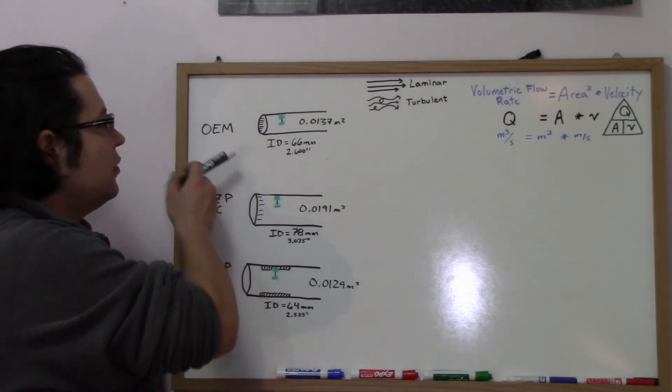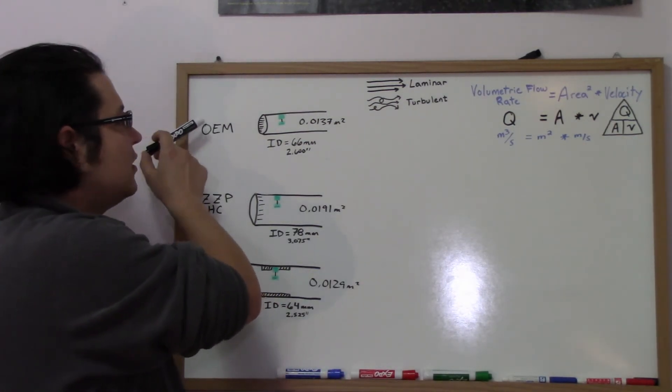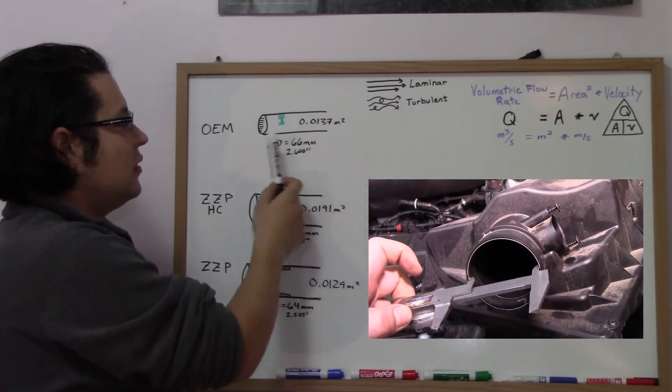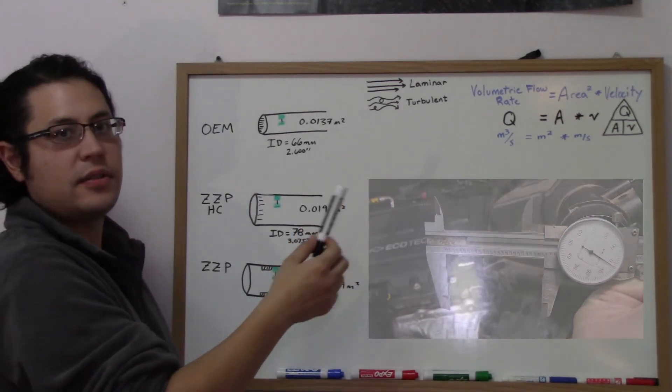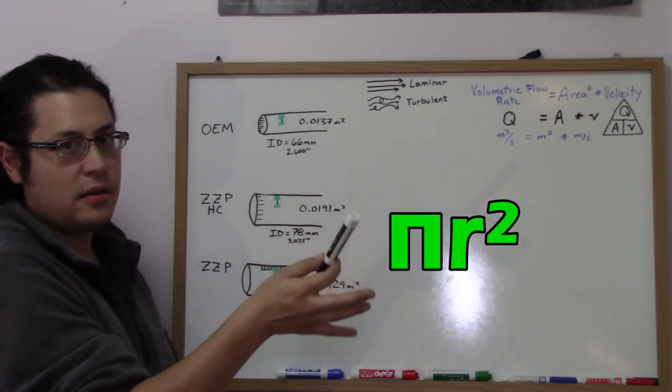Over here we have our OEM system depicted. We have an inside diameter of 66 millimeters, and here's the cross-sectional area, pi r squared.